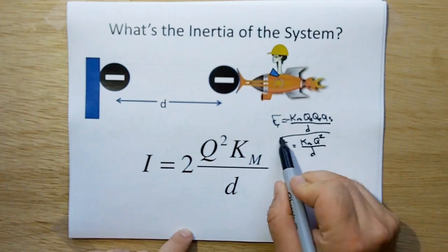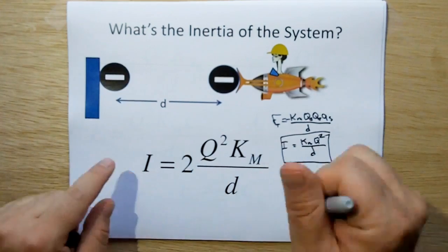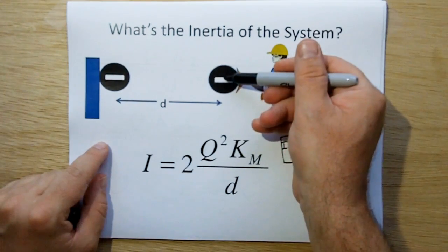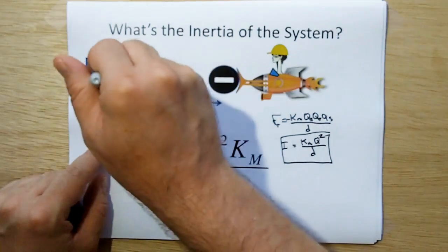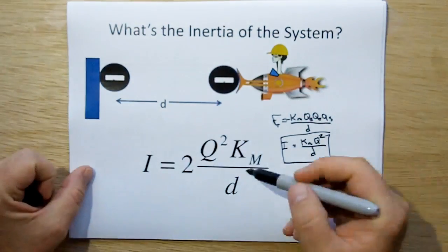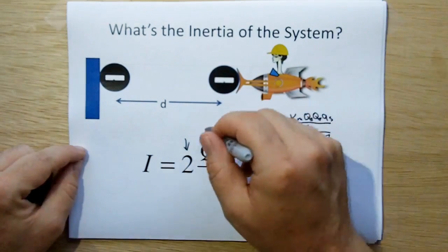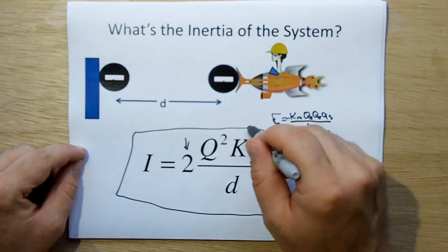Okay, now the reason why there's two here is because you've got this inertial force, inductive force acting on this charge, and this one acting on this charge, so there's two overall contributors. That's the reason for the number two. So the inertia of this system is given by this quantity.